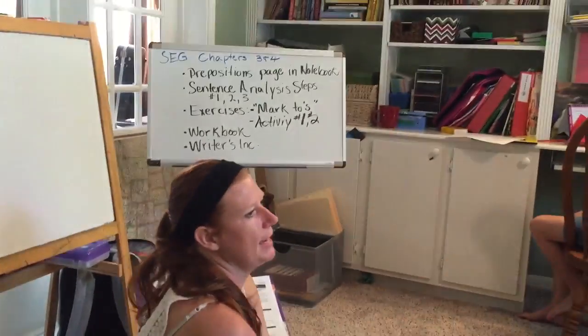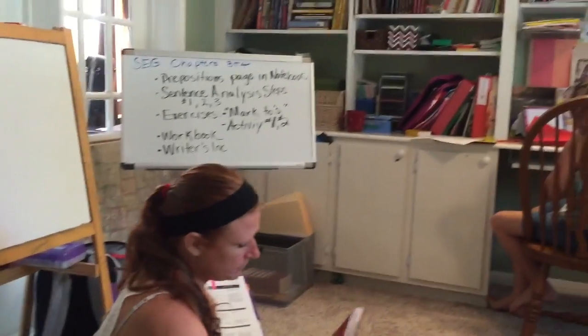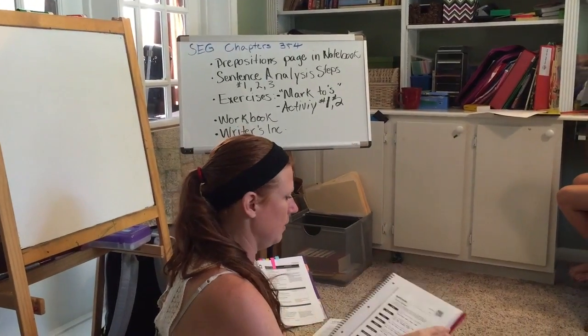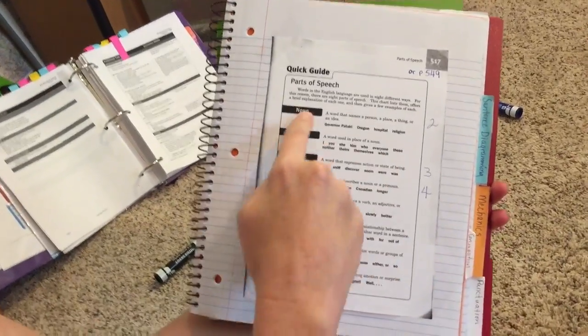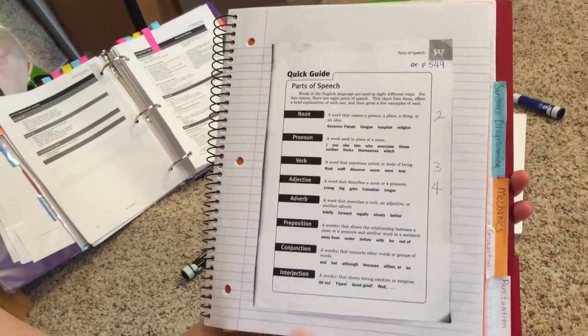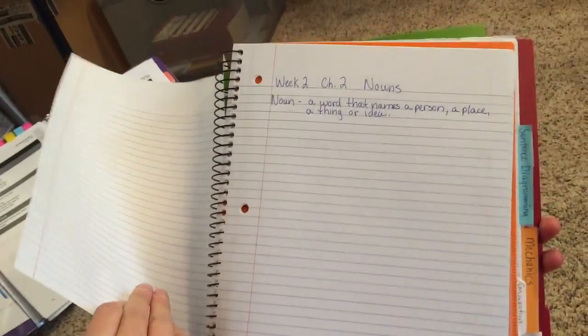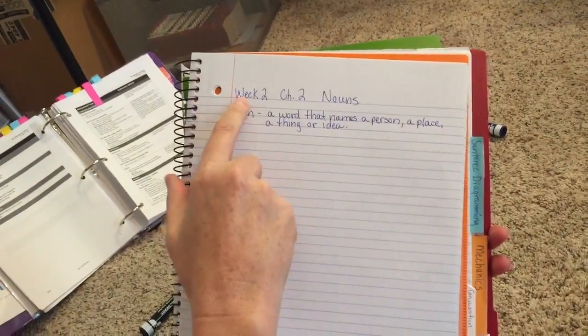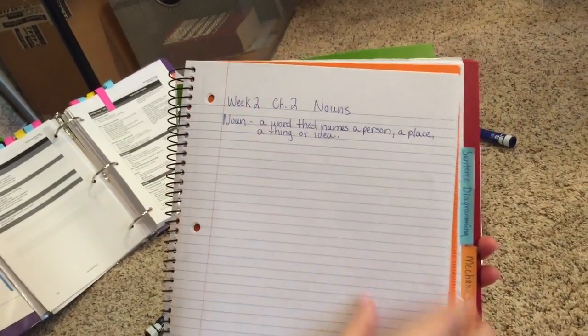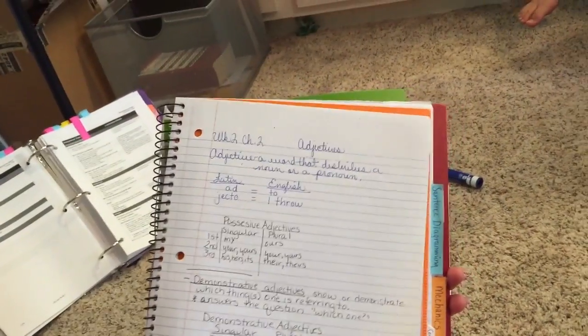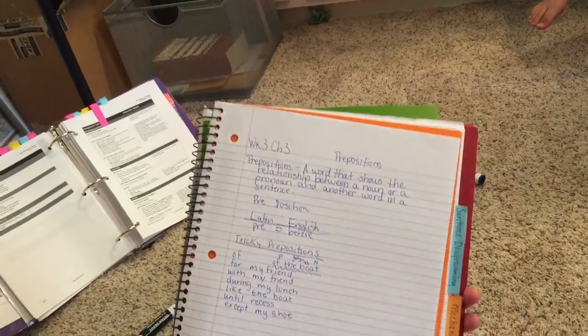Do you remember the very first thing we did last time? In our parts of speech tab, we created a page for nouns, verbs, and adjectives. So this time we're going to do prepositions — we're going to make a prepositions page. I want you to do the header: week 3, chapter 3, prepositions. In your Stevenson Grammar notebook, behind the parts of speech tab.